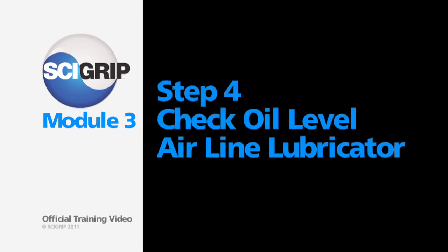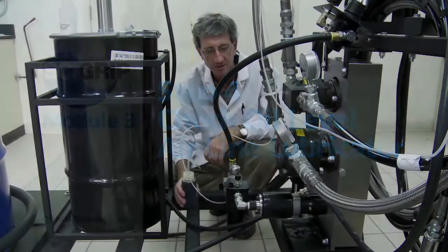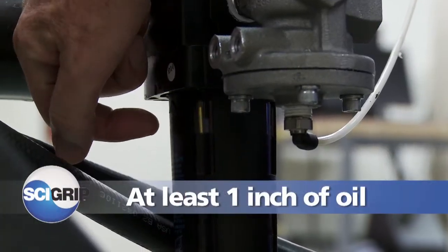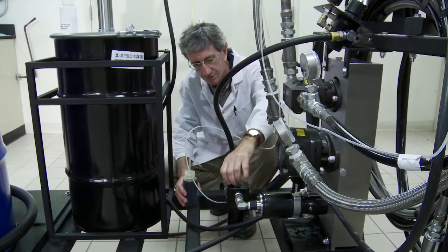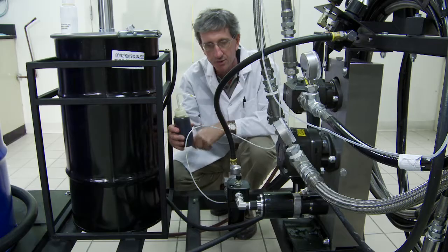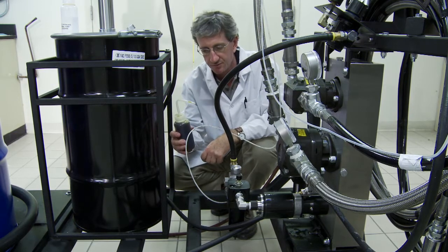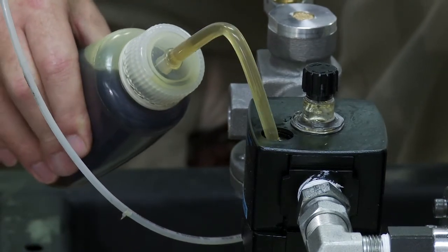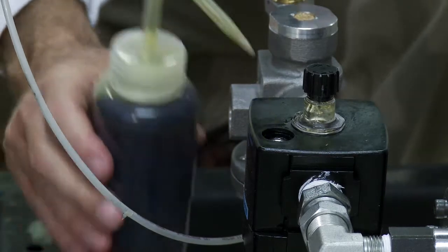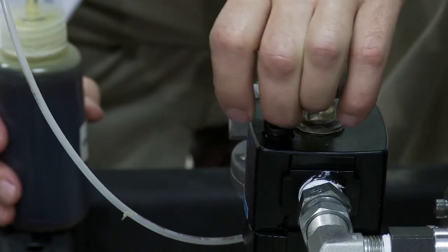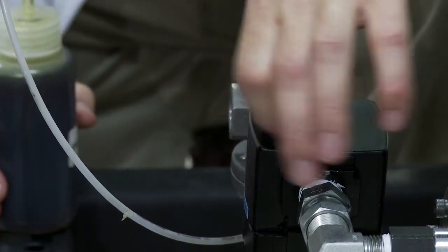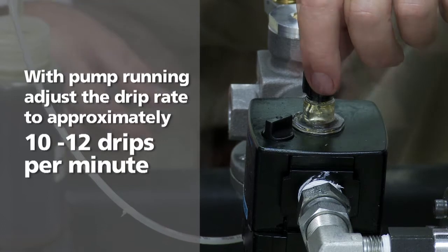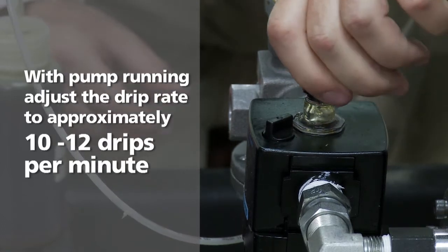Step four is to check the oil level in the airline lubricator. To check the oil in the lubricator, look at the sight glass and see that you have at least an inch of oil. If it's low, unscrew the fill plug. Use the darker of the two oils provided that should be filled with air tool oil. Take your air tool oil and squirt it in the hole until the reservoir is full. Replace the plug. Then with the pump running, adjust the drip rate on the oiler until it's dripping about 10 to 12 drips per minute.